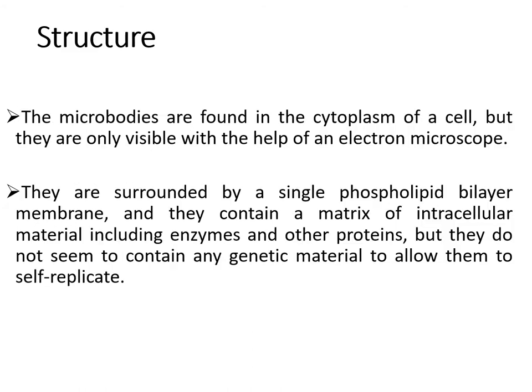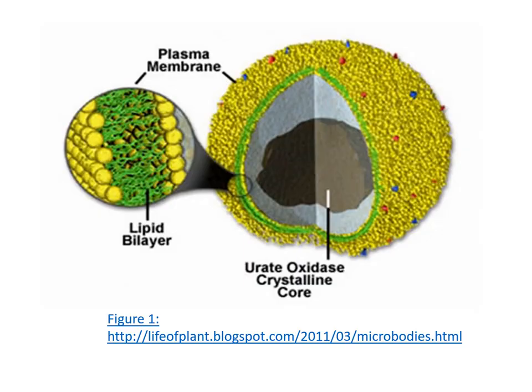Regarding structure, microbodies are found in the cytoplasm of a cell but are only visible with the help of an electron microscope. They are surrounded by a single phospholipid bilayer membrane and contain a matrix of intracellular material including enzymes and other proteins. Importantly, they do not contain any genetic material like mitochondria, which means they cannot self-replicate because they have no DNA.